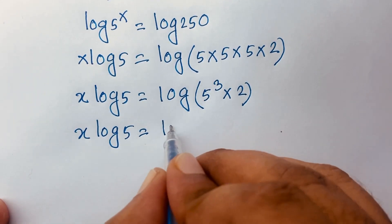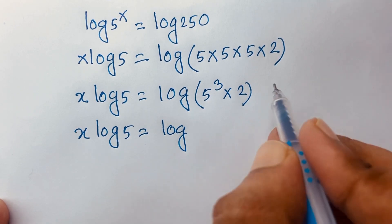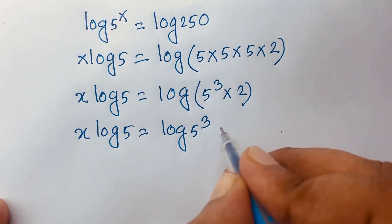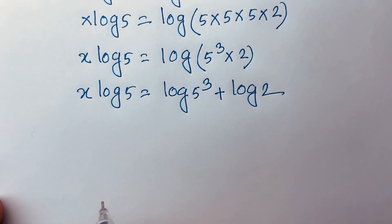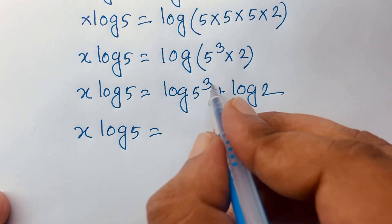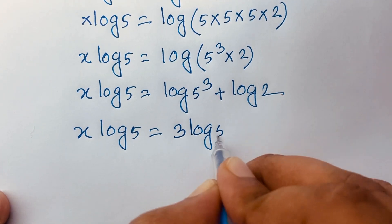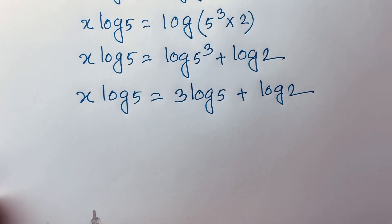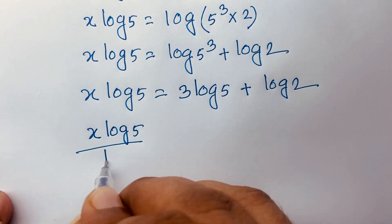Using the logarithm product rule — log(ab) equals log a plus log b — I can write x log 5 equals log(5 to the power 3) plus log 2. The exponent moves to the front, so x log 5 equals 3 log 5 plus log 2. Now divide both sides by log 5.